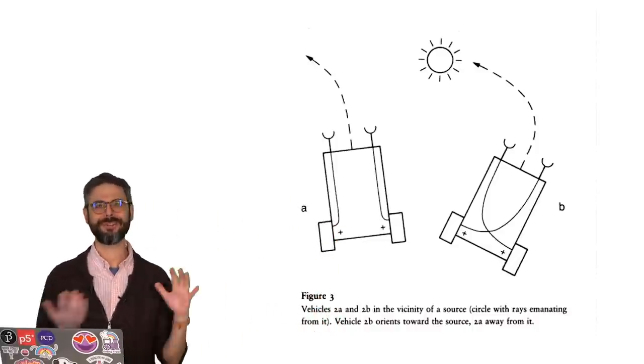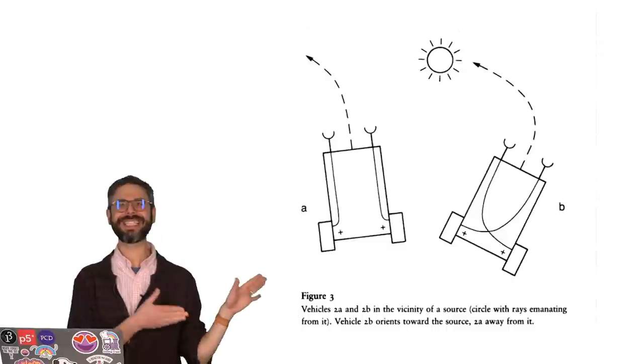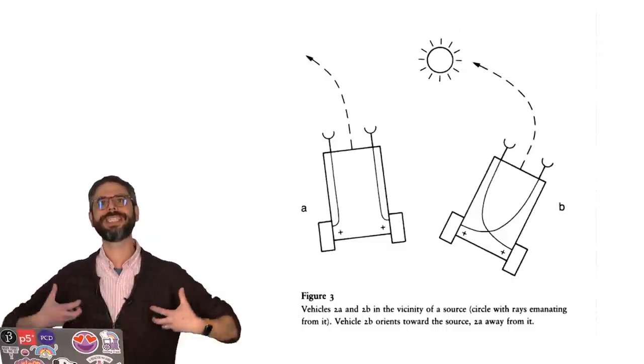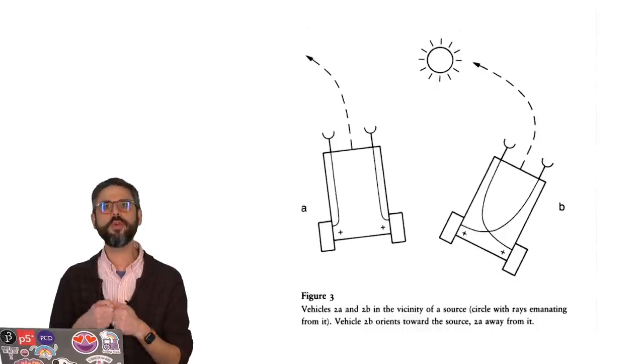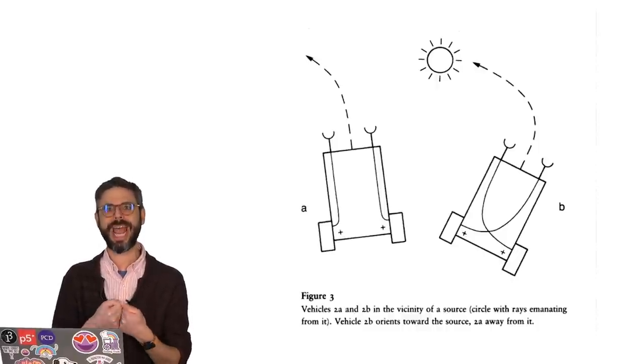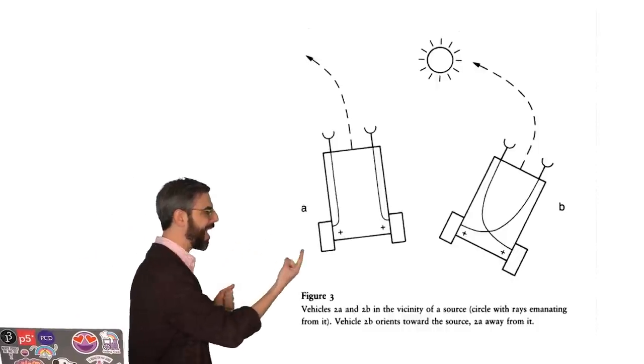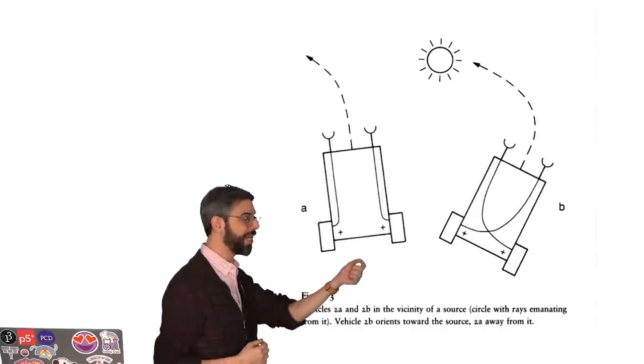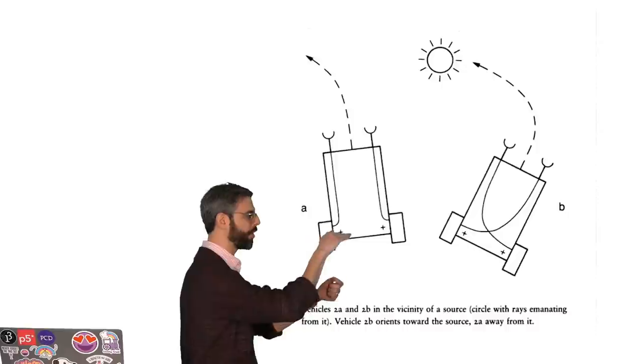But the sort of magic, the wonder of Breitenberg's book is not the sense of these vehicles as just steering away or towards, but as exhibiting a motion through their sense perception and motion itself. The left exhibits fear moving away from the light. The right exhibits aggression moving towards the light.